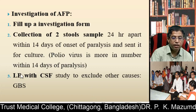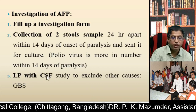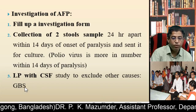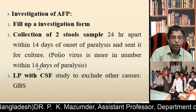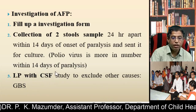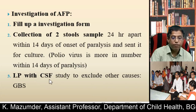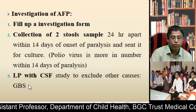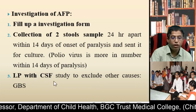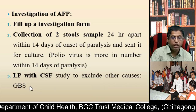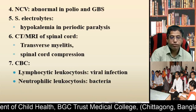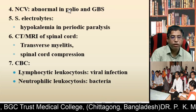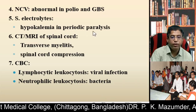The second investigation is lumbar puncture with CSF study to exclude other causes such as Guillain-Barré syndrome. If you do the LP and collect the CSF for protein study after two weeks of paralysis, you get raised protein in Guillain-Barré syndrome with reduced cell count — this is called albuminocytological dissociation. Nerve conduction velocity is abnormal in both polio and Guillain-Barré syndrome. If you do serum electrolytes, you may find hypokalemia in periodic paralysis.